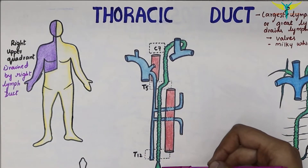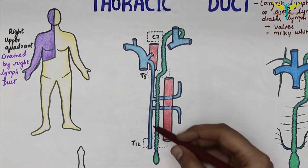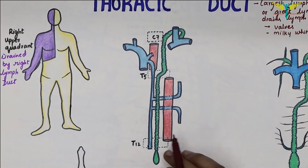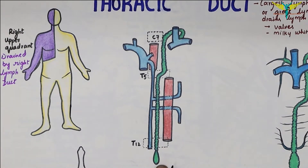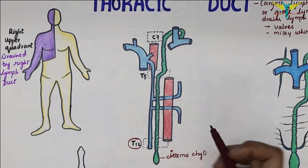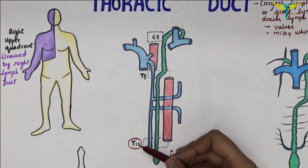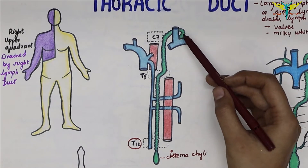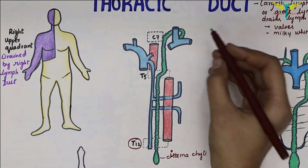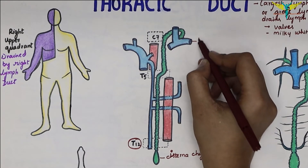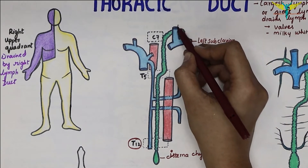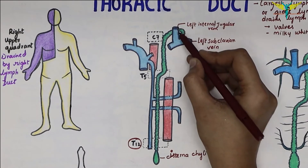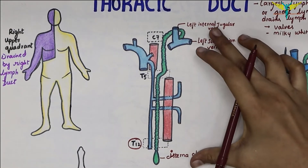The thoracic duct extends from the upper end of the cisterna chyli on the posterior abdominal wall at the lower border of T12 vertebra to the junction between the left internal jugular vein and the left subclavian vein at the root of the neck. You can see the beaded lymphatic duct in the diagram.